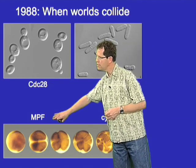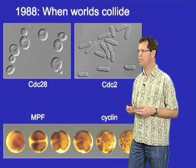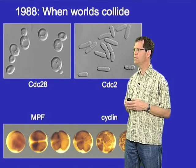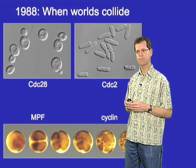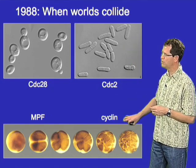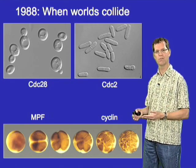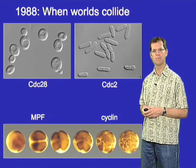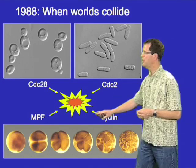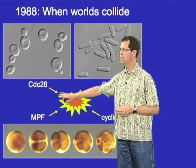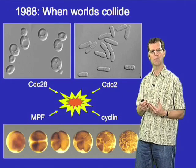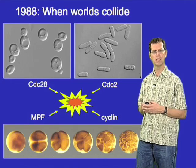Meanwhile in the frog, Masui and others had identified a maturation promoting factor or MPF activity capable of driving frog eggs into mitosis — this M phase promoting factor could initiate mitosis when injected into non-mitotic cells. Then Tim Hunt and colleagues identified a protein called cyclin whose levels oscillate during the cell cycle, rising in mitosis and falling thereafter, suggesting it might be a component of an important regulatory molecule. In the late 1980s all these fields collided when it was realized that MPF was in fact a complex of a small protein kinase related to CDC28 and CDC2, and cyclin.